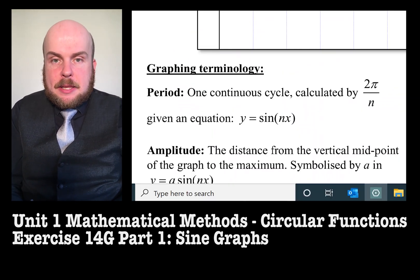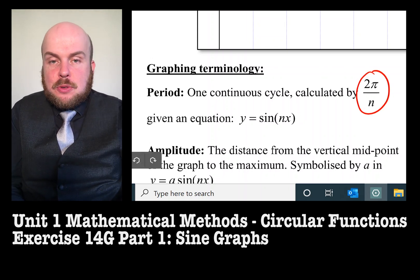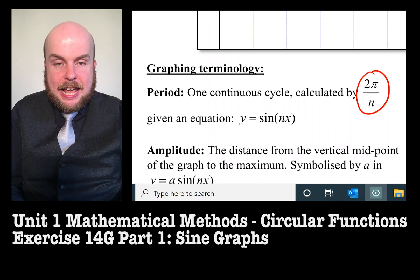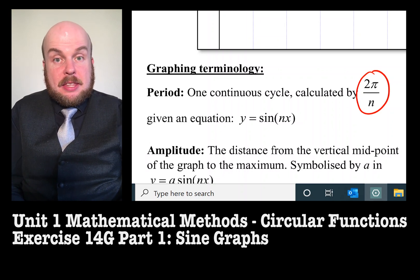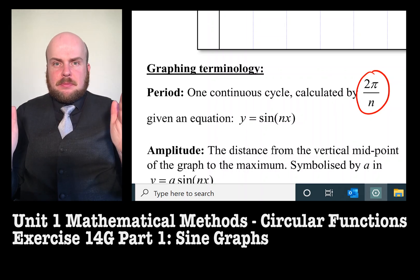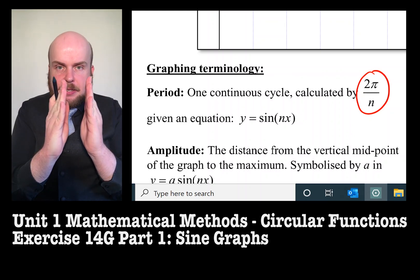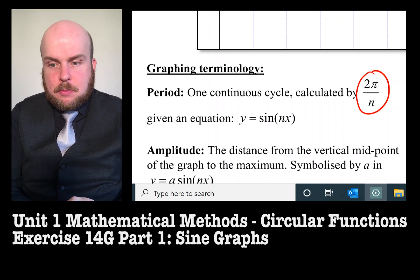We calculate the period for a sine graph as being 2 pi over n, where n is whatever number is in front of the x in the brackets. This n inside will either make it stretched out if that n is a value between 0 and 1, if it's a fraction, or it will shrink it if it's a number greater than 1.